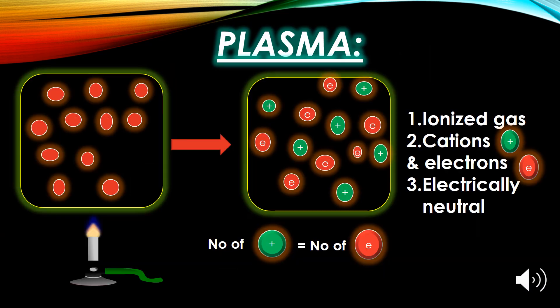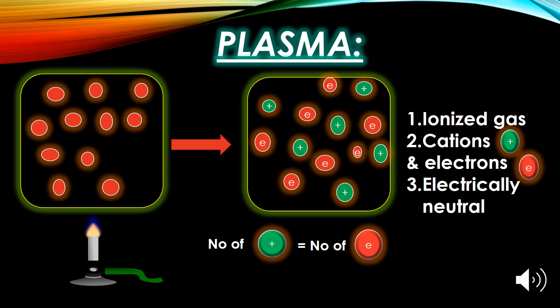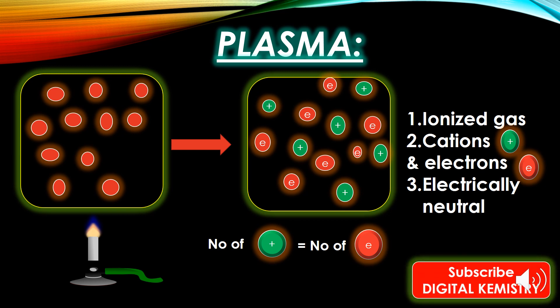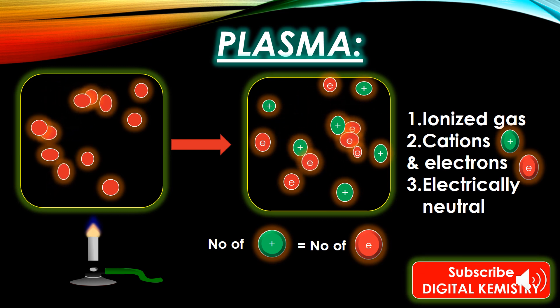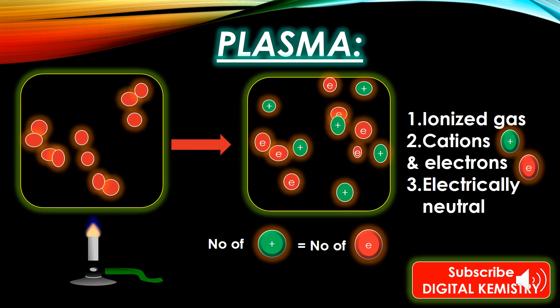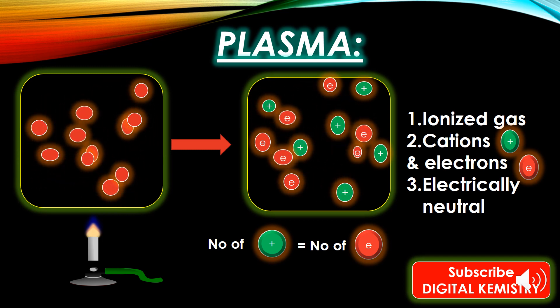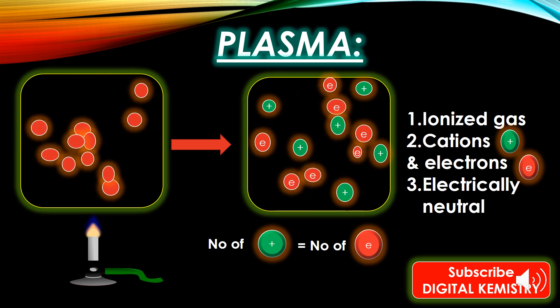Plasma is derived from a Greek word meaning 'moldable substance' or 'jelly.' It is the fourth and ionized state of matter, which consists of free-moving neutral particles, positively charged nuclei, and negatively charged electrons. Plasma is neutral as a whole due to the equal number of positive ions and negative electrons.